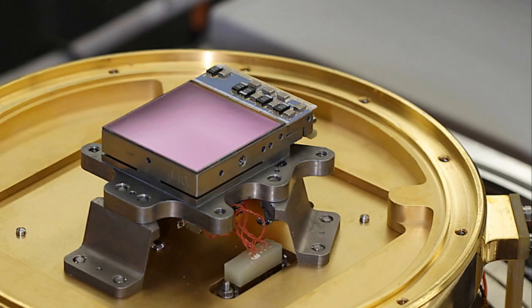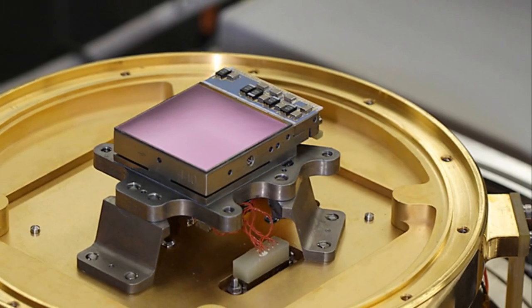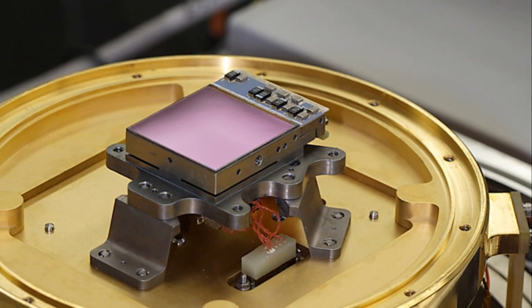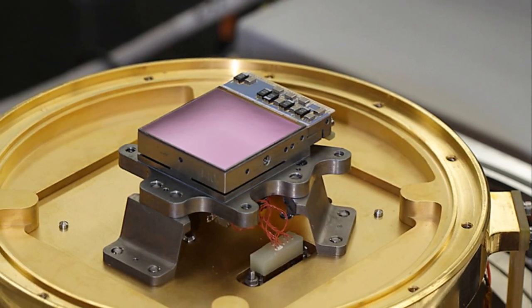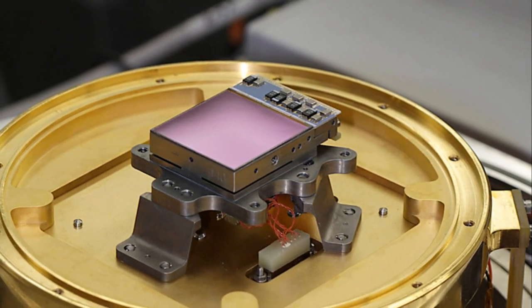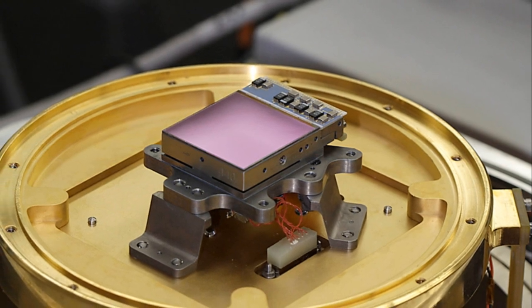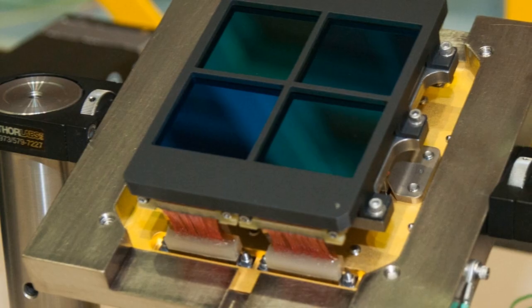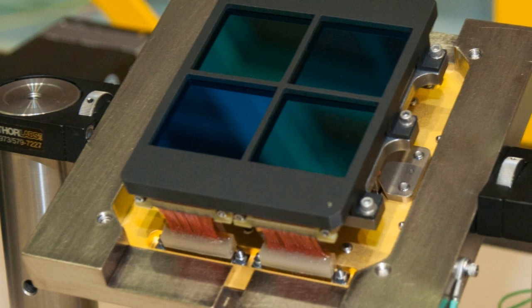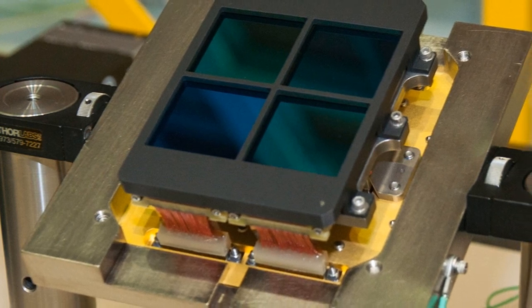Now, you might wonder, how does the James Webb Space Telescope capture these images? Well, it uses a suite of specialized instruments designed to detect light across a broad range of wavelengths, from visible light, which our eyes can see, to the infrared, which we can't.